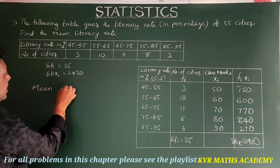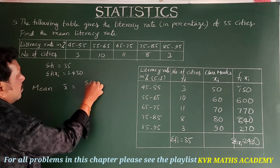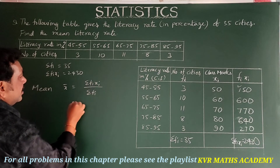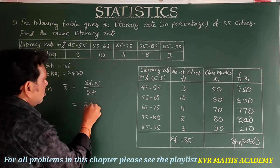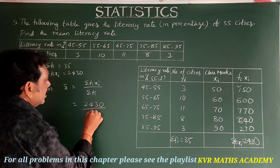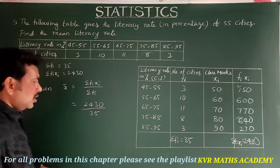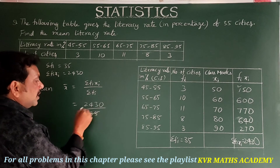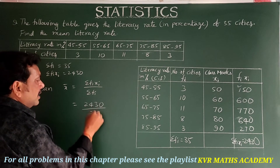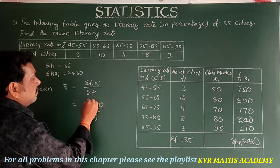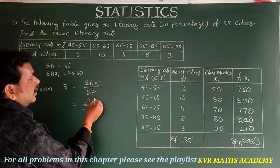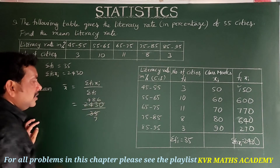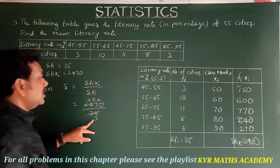Now in the direct method, the formula is: mean x̄ = Σfi·xi ÷ Σfi. That is equal to 2430 ÷ 35.